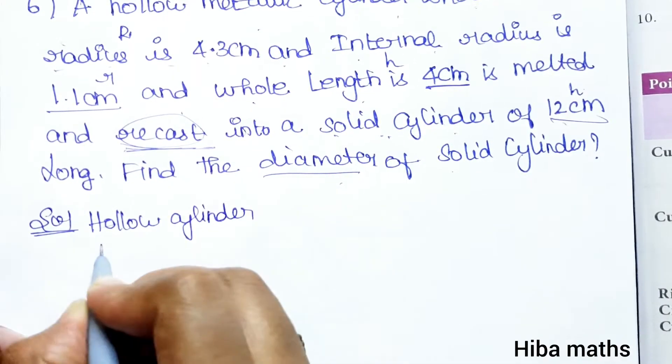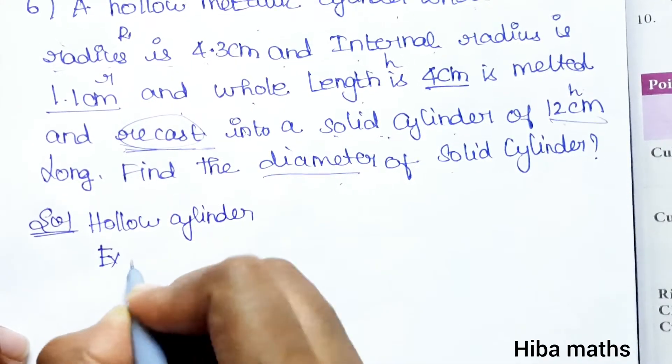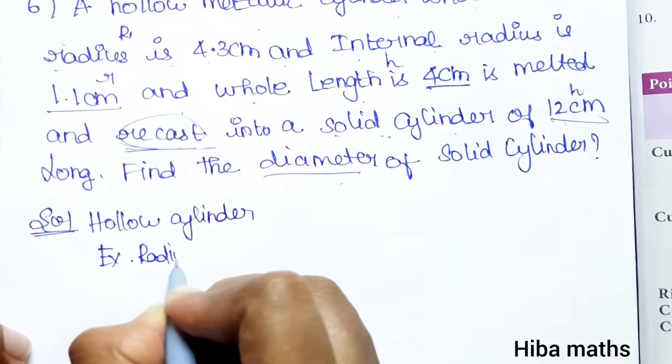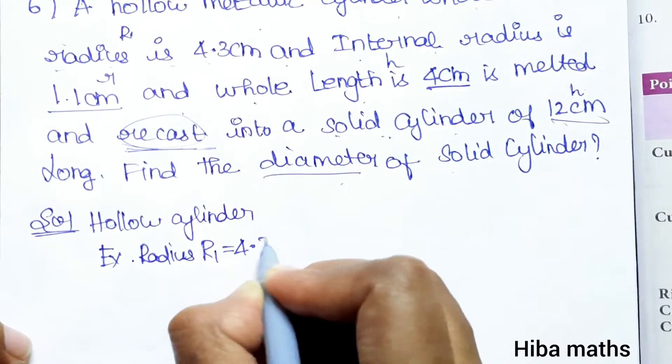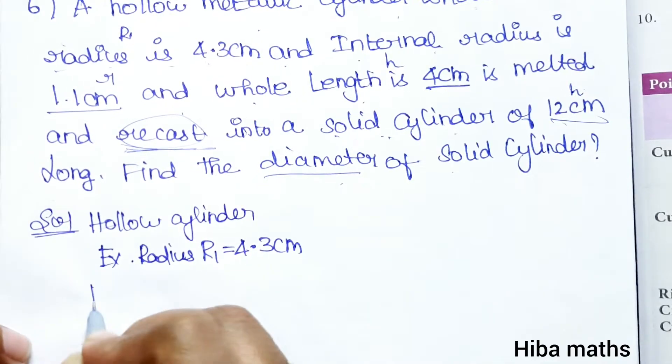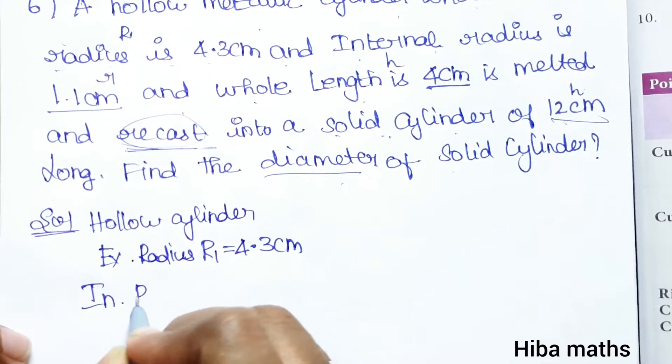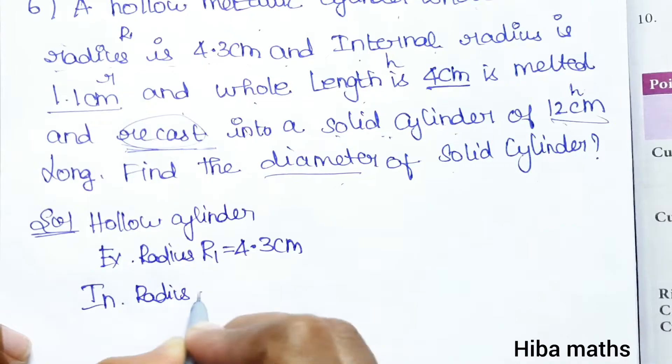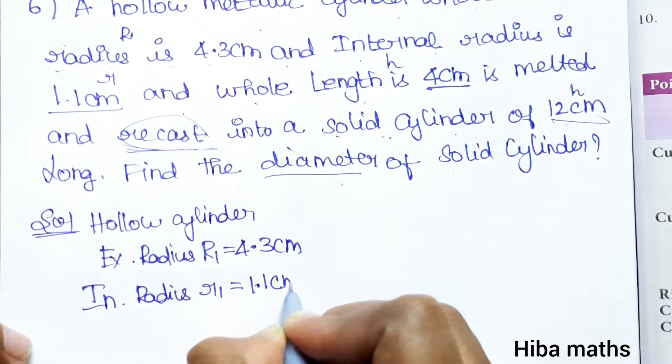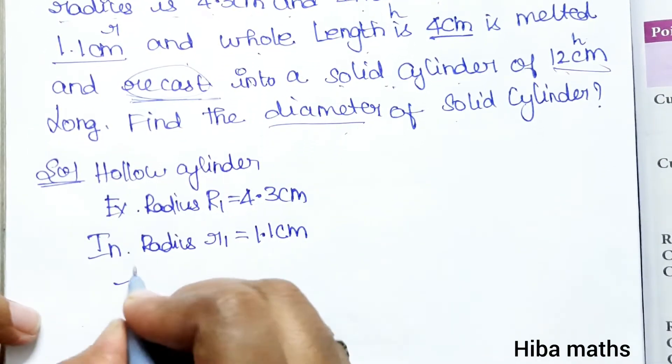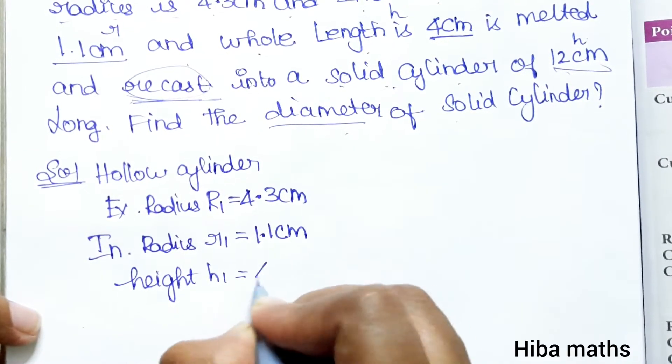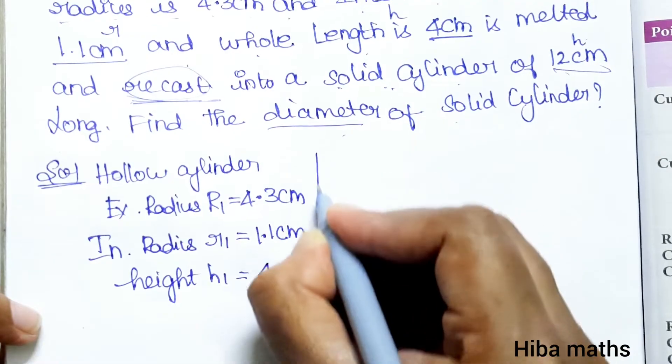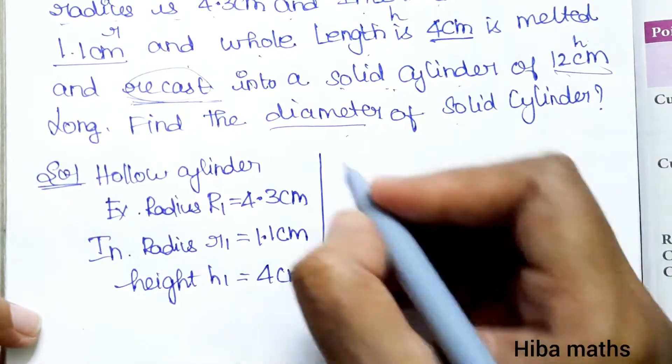Hollow cylinder: external radius, full radius R1 is 4.3 cm, internal radius r1 is 1.1 cm, and height or length h1 is 4 cm. Now we can move on to the solid cylinder.